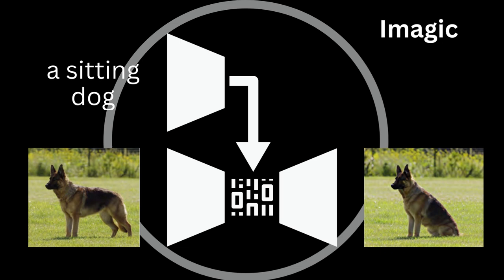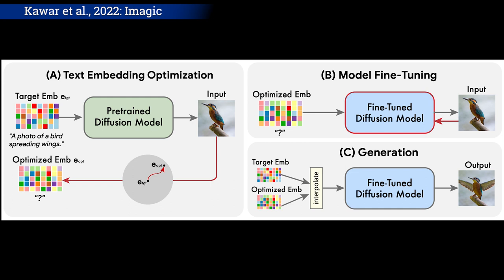To start, we have to encode both the text and the initial image so that it can be understood by our Imagen model. When this is done, we optimize our text encodings, or text embeddings, to better fit our initial image. Basically, we take our text representation and optimize it for our initial image — called eOptimize — to be sure it understands that, in this example, we want to generate the same kind of image with a similar-looking bird and background.